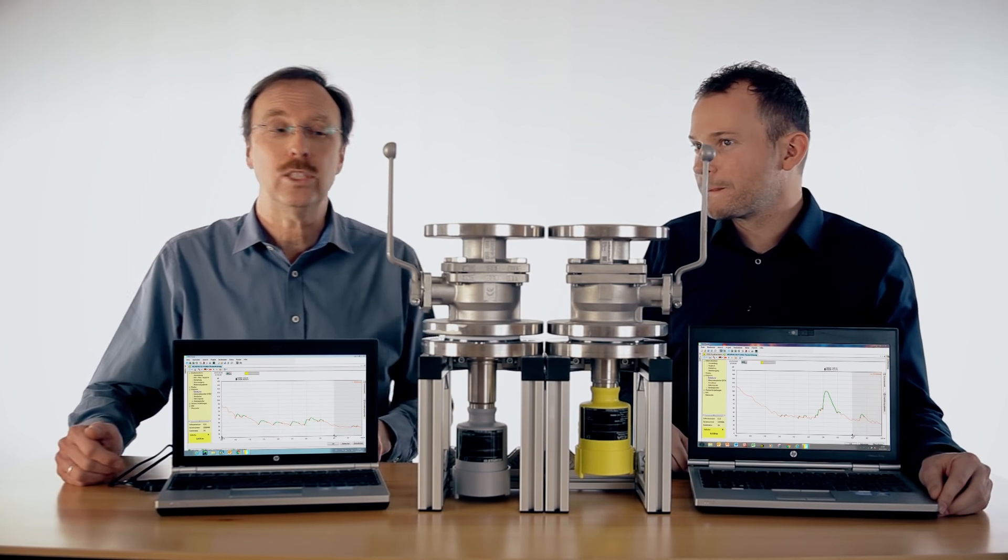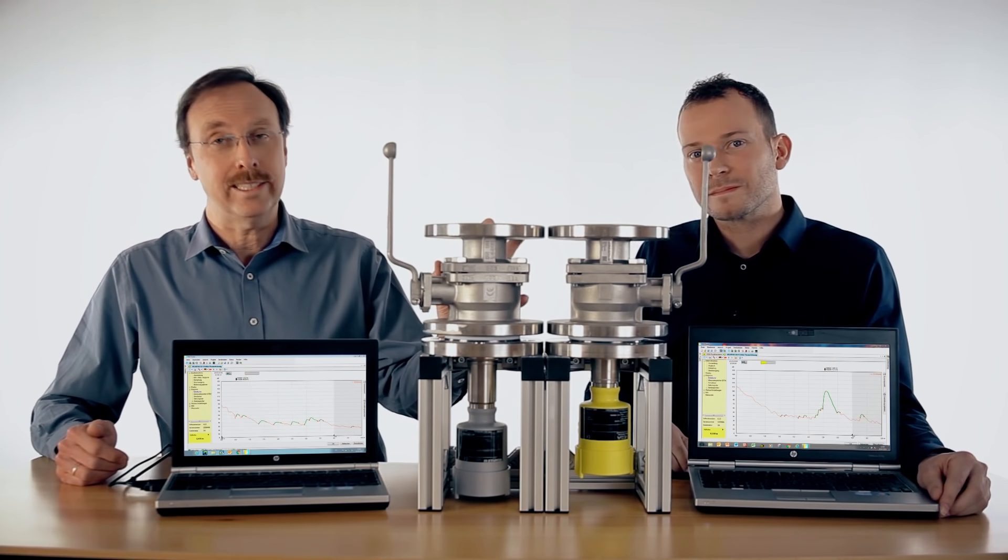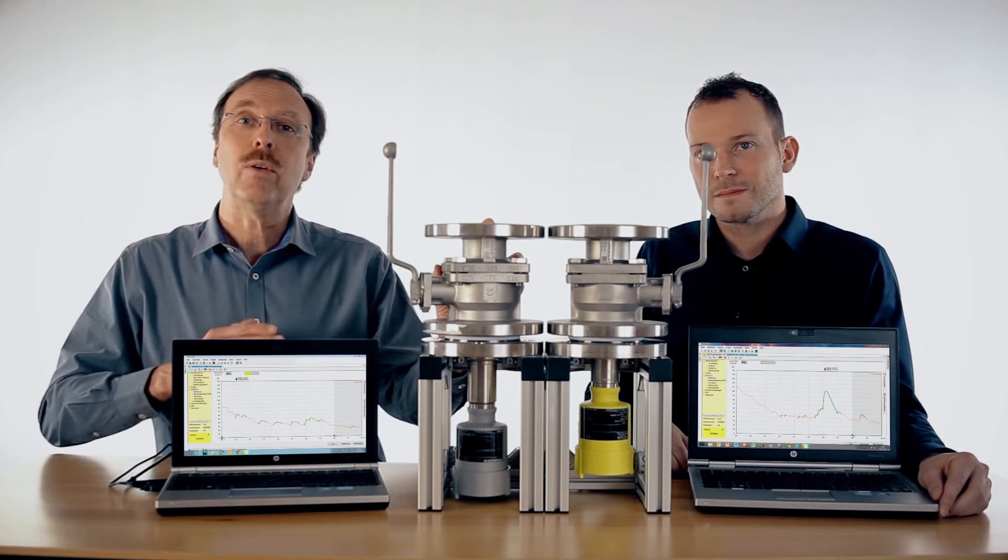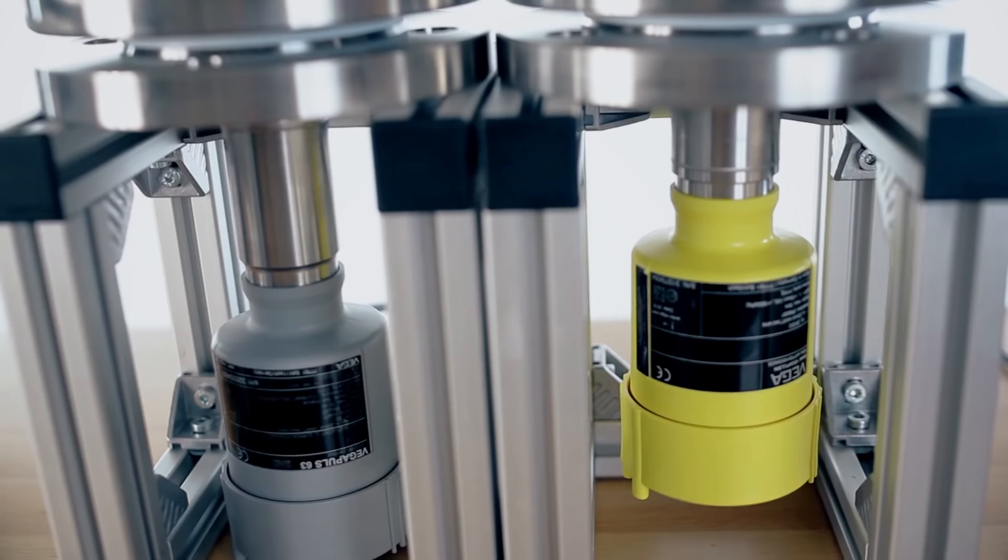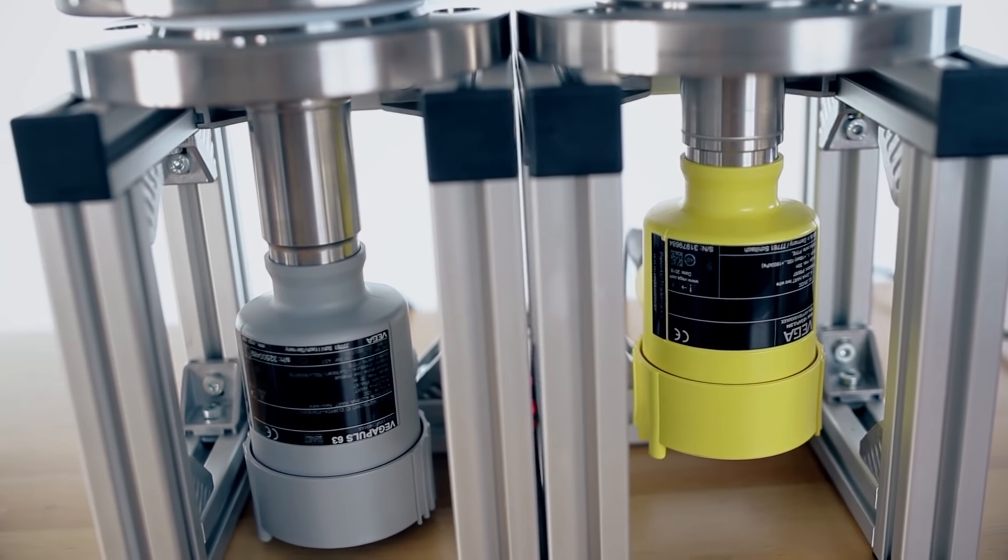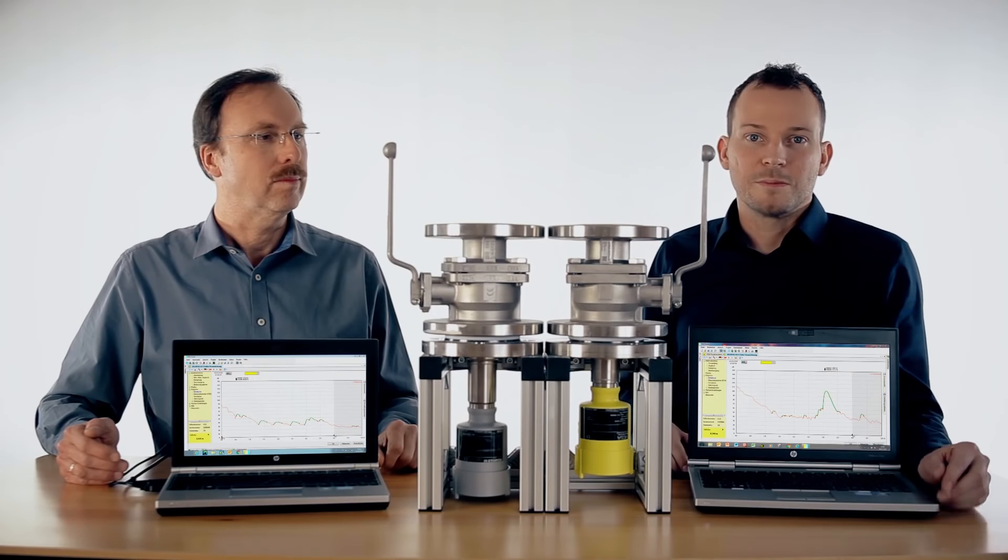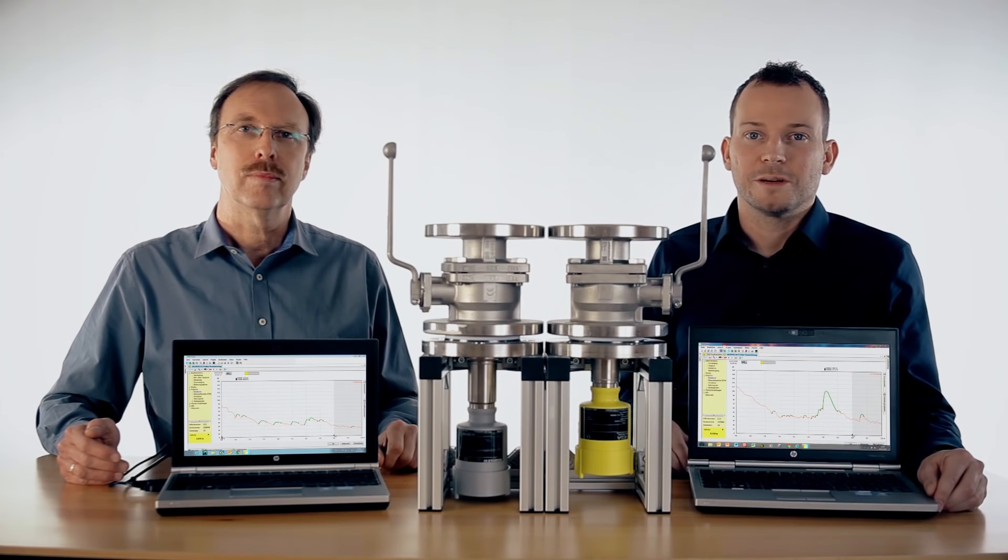This means for your application it is possible to use existing ball valves and you get a very high reliability over the whole complete measuring range. So the Vega Pulse 64 is the perfect sensor for your ball valve applications.